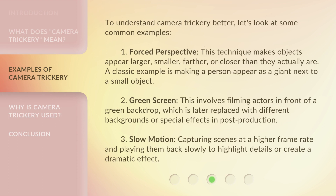To understand camera trickery better, let's look at some common examples. First, forced perspective. This technique makes objects appear larger, smaller, farther, or closer than they actually are. A classic example is making a person appear as a giant next to a small object. Second, green screen. This involves filming actors in front of a green backdrop, which is later replaced with different backgrounds or special effects in post-production.